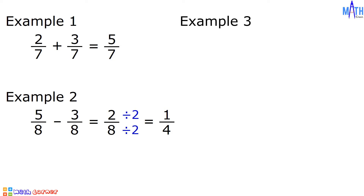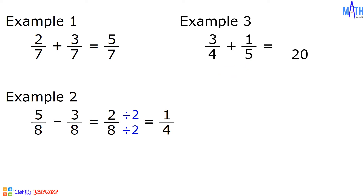Example number 3: 3 over 4 plus 1 over 5. To answer this, let us use a shorter way in adding dissimilar fractions. Let us multiply the denominators: 4 times 5 is equal to 20, and 20 is the denominator. Next, let us cross multiply: 3 times 5 is equal to 15, plus 4 times 1 is equal to 4. Let us add 15 and 4, and it is equal to 19. So the answer is 19 over 20.